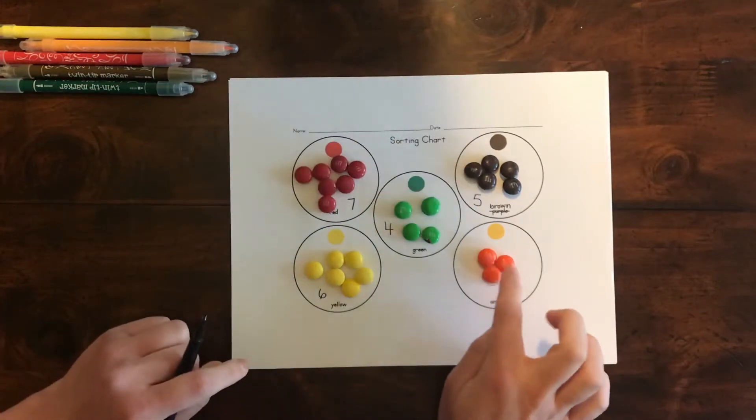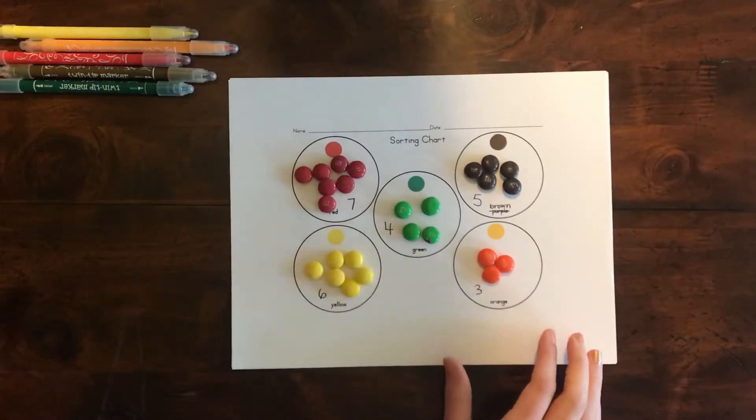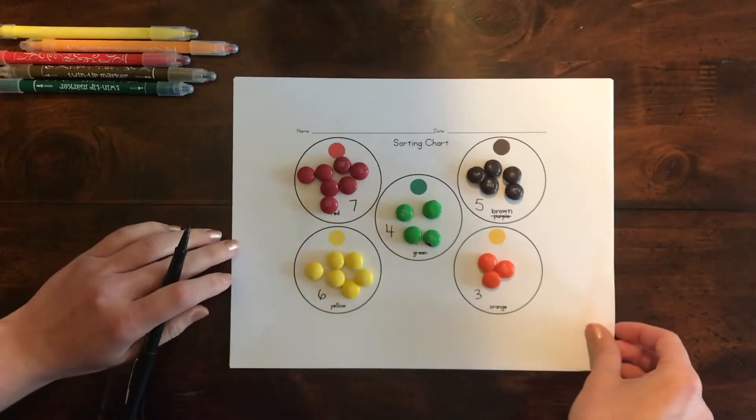And orange. One, two, three. So now we have our totals and all of our M&Ms sorted.